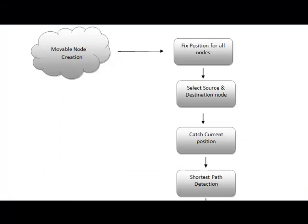Here is the dataflow diagram for our project. In movable node creation, we create the mobile network with a number of movable nodes with their unique details like area and speed averages. We identify and fix the position of the remaining nodes available in the network to find the distances between them. We then select the source and destination node for data transformation and identify the current position of each node to find the shortest path.